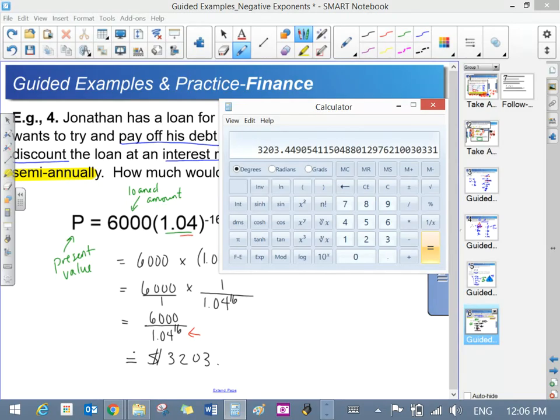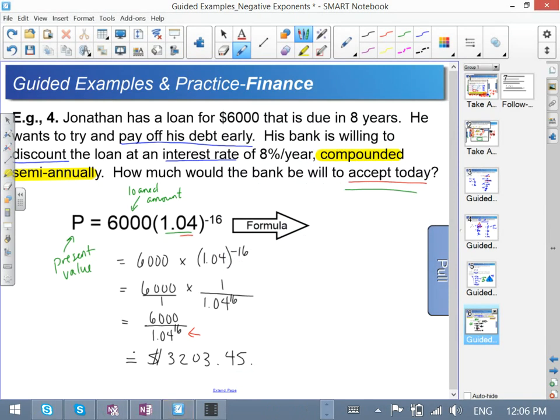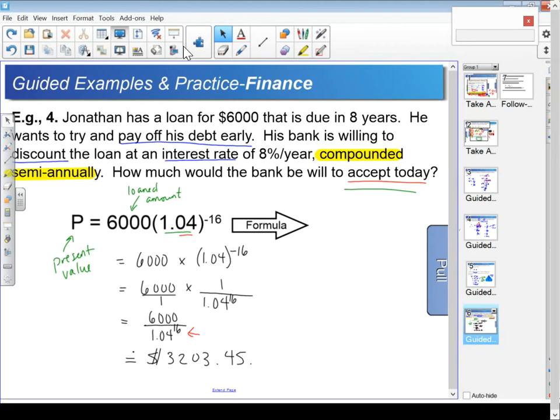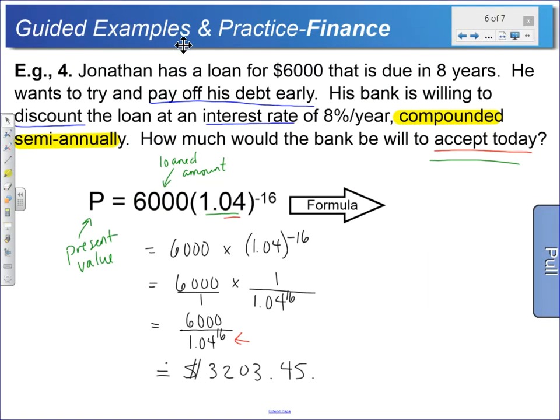This is approximately a dollar amount: three thousand two hundred and three dollars and 45 cents. So the bank would accept today $3,203.45 to pay off what is Jonathan's six thousand dollar loan, because that loan includes what he borrowed plus all the interest that's accrued.